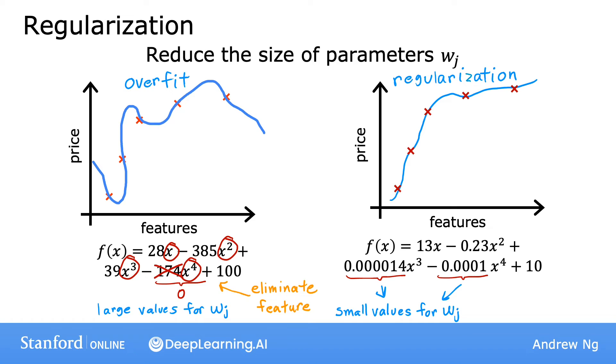By the way, by convention, we normally just reduce the size of the wj parameters, that is w1 through wn. It doesn't make a huge difference whether you regularize the parameter b as well. You could do so if you want or not if you don't. I usually don't, and it's just fine to regularize w1, w2, all the way to wn, but not really encourage b to become smaller. In practice, it should make very little difference whether you also regularize b or not.